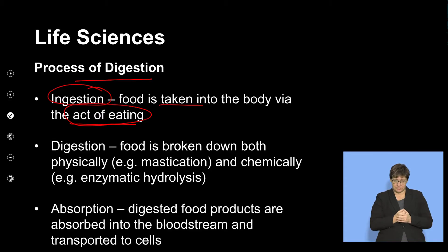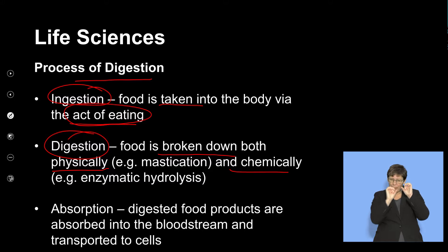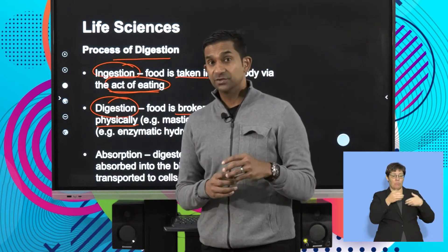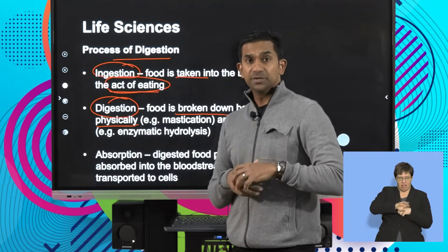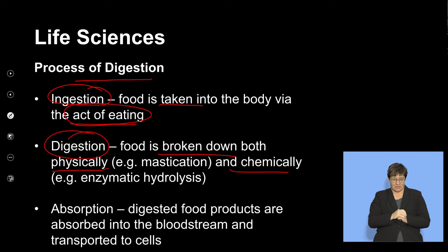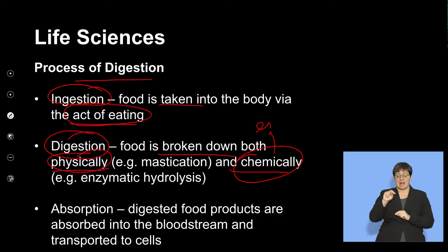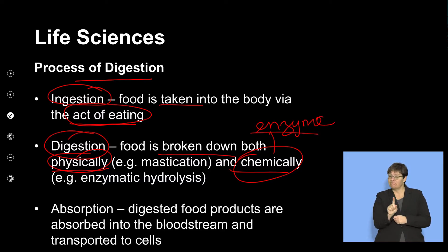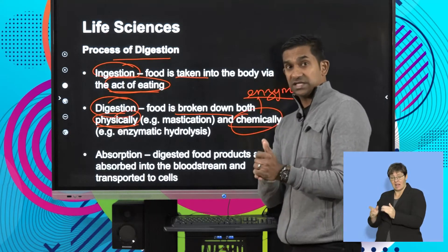Digestion refers to breaking down — both physical and chemical breakdown. Physical breakdown happens in the mouth during chewing, as well as in the stomach with the churning process where food mixes with gastric juices, breaking food into smaller particles. Chemical digestion requires enzymes — essentially three groups: enzymes that digest carbohydrates, enzymes that digest proteins, and enzymes that digest fats, fatty acids, and lipids.